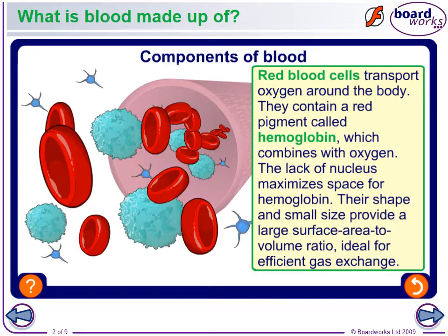With the Blue People of Troublesome Creek, you also have the founder effect, because one individual had the condition, intermarried, and a whole group resulted from that genetic bottleneck.